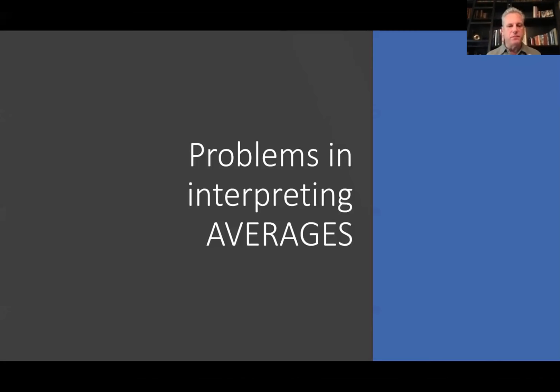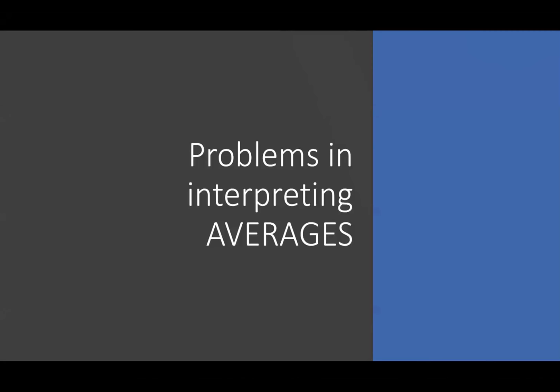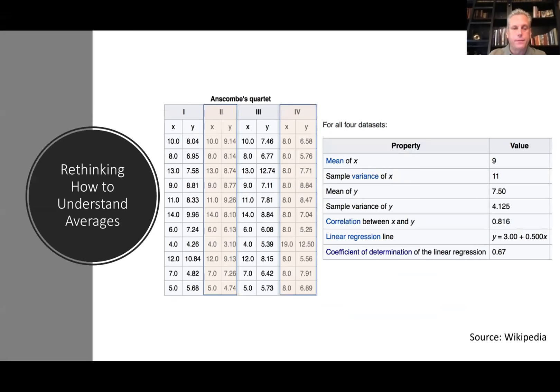Let's continue to problems in interpreting averages. We've understood that in calculating an average, you want to look at the numerator and denominator and that it's often problematic to take an average of averages. But let's talk about problems in understanding and interpreting averages.